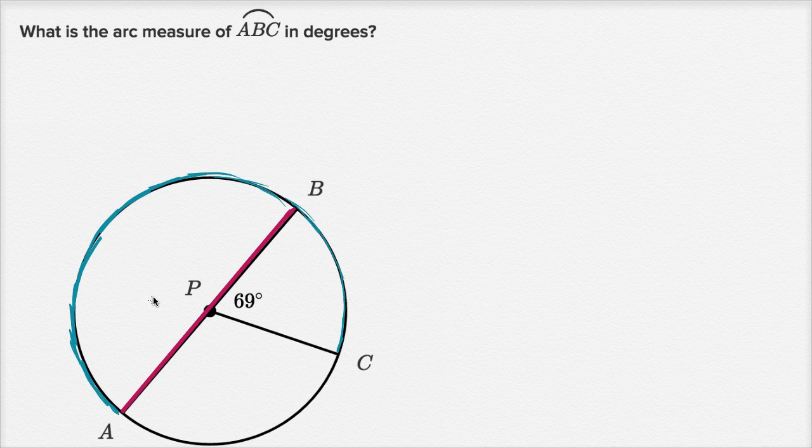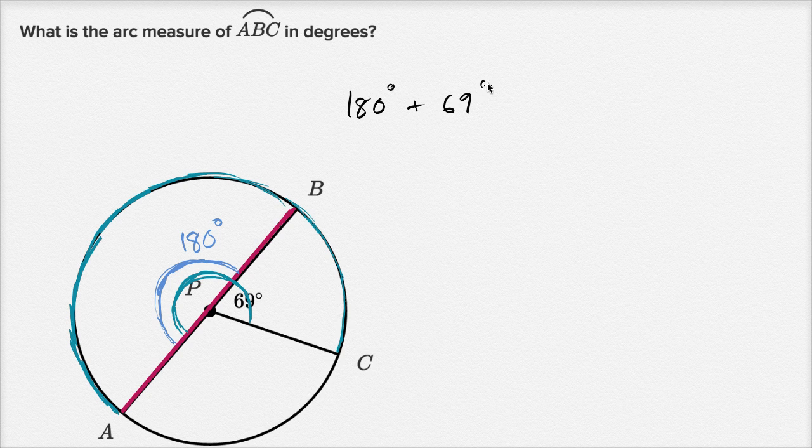So what is that going to be? Well, it's going to be, in degrees, the same measure as the central angle that intercepts it. So it's going to be the same thing as this central angle right over here. Well, what is that central angle going to be? Well, since we know that this is a diameter, since AB is a diameter, we know that this part of it is going to be 180 degrees, we're going halfway around the circle. And so if we want to look at this whole angle, the angle that intercepts the major arc ABC, it's going to be the 180 degrees plus 69 degrees. So we're going to have 180 degrees plus 69 degrees, which is equal to 249 degrees. That's the arc measure of this major arc ABC.